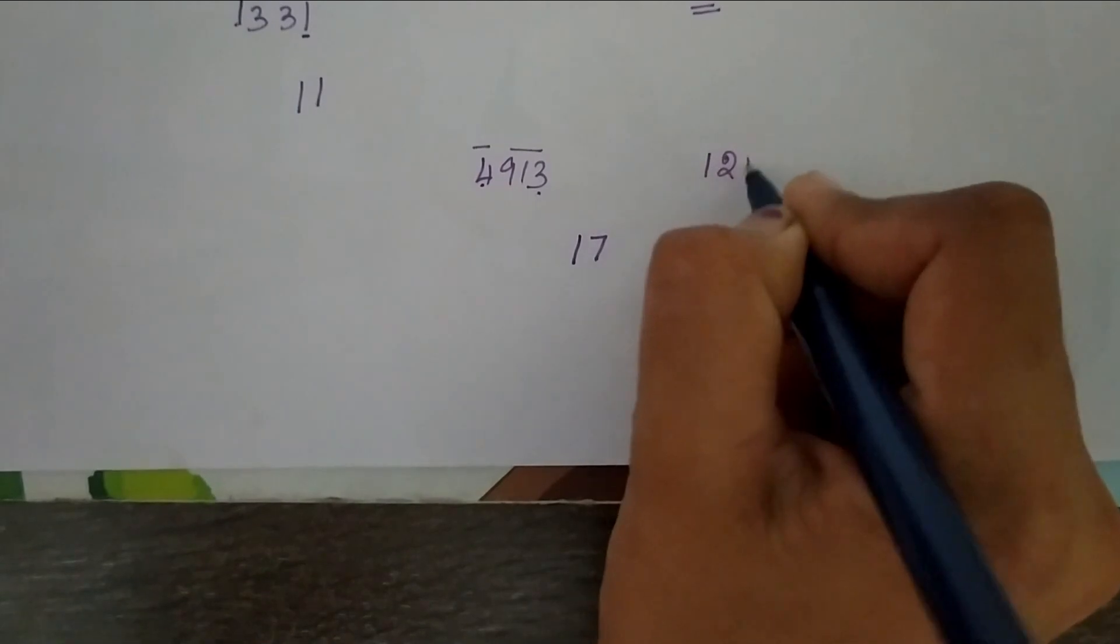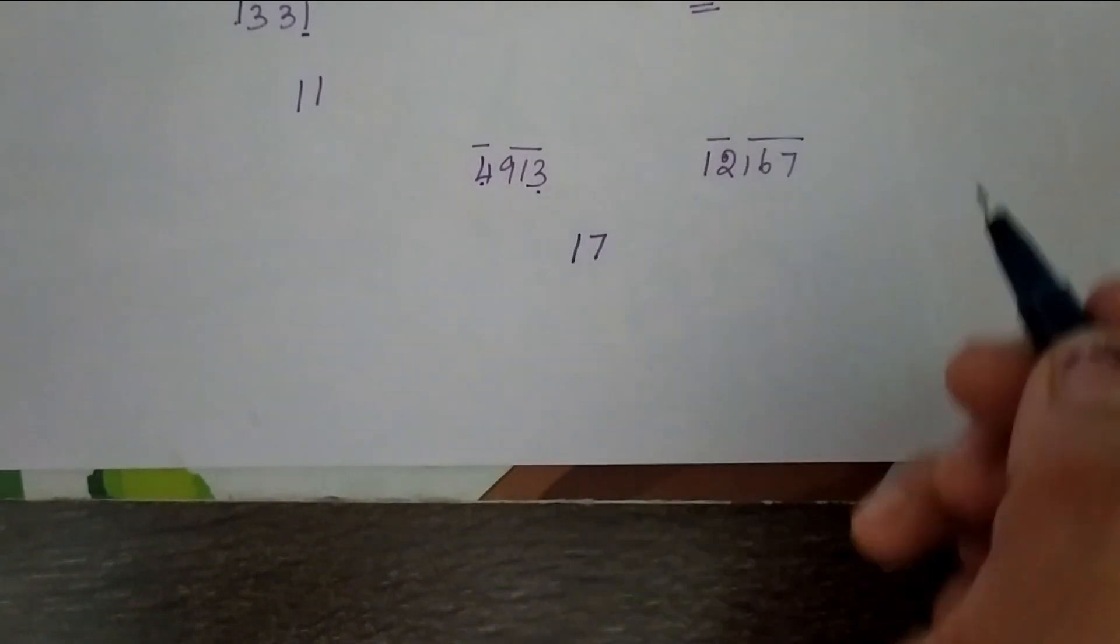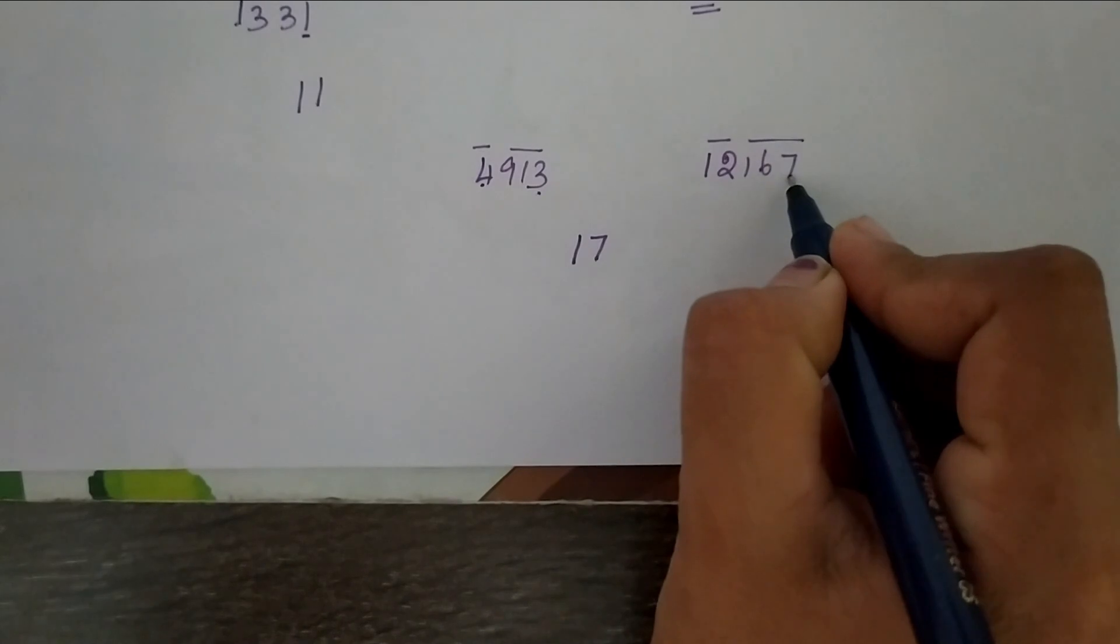Again, 12167. Group into three digits. First group. Here unit digit is 7.